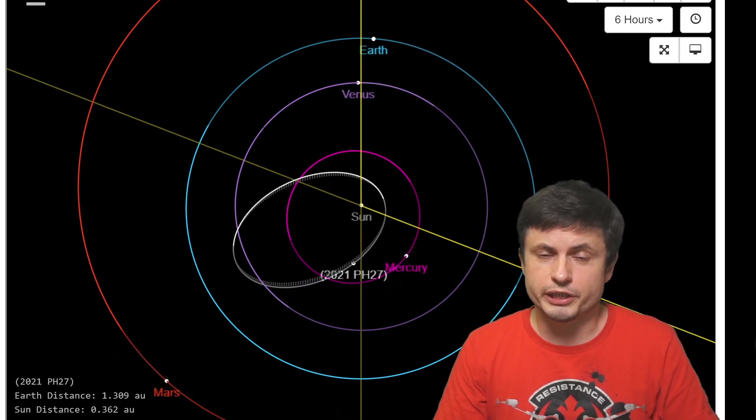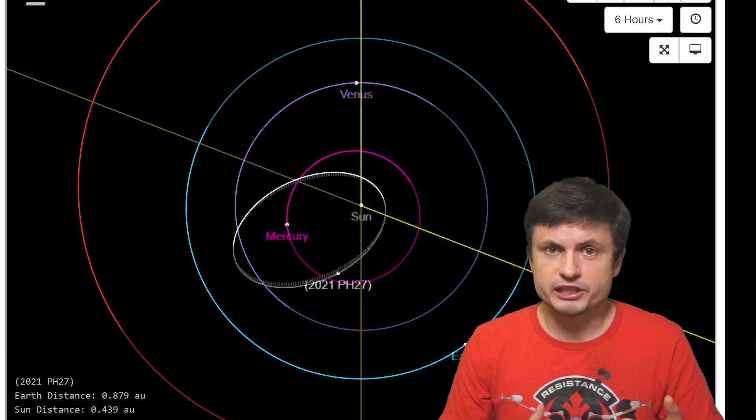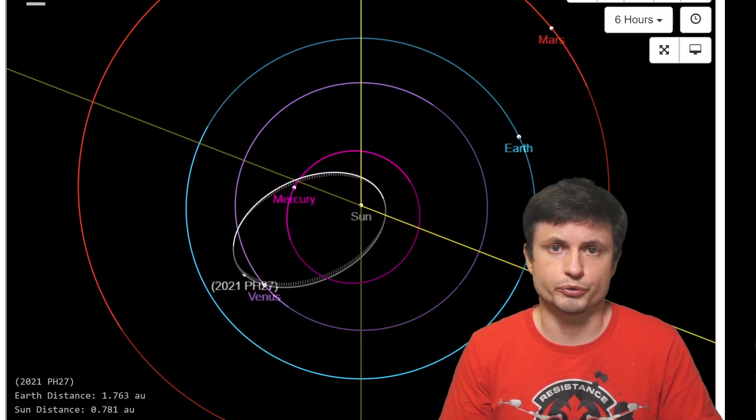And so this precession can entirely be explained by Einsteinian theory. At the same time, its orbit in general is already quite unusual and somewhat difficult to explain, especially if we try to figure out where this object came from or what family it belongs to.